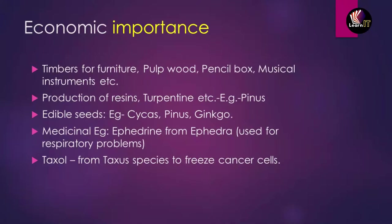For economic importance, the timber or wood from gymnosperms is used for making pulpwood, pencil boxes, and musical instruments. They also produce resins and turpentines from Pinus. Edible seeds come from Cycas, Pinus, and Ginkgo. They also have medicinal properties for curing respiratory problems — for example, Taxol from Taxus species can freeze cancer cells.